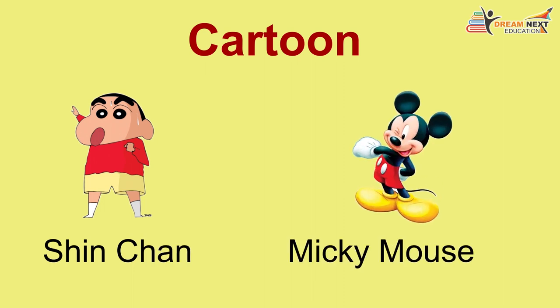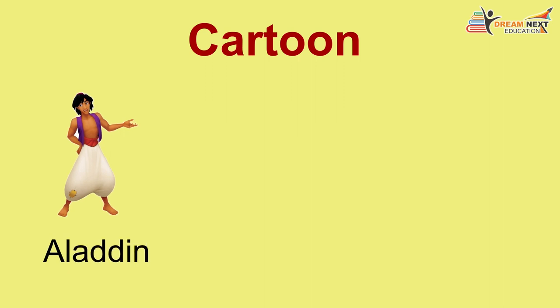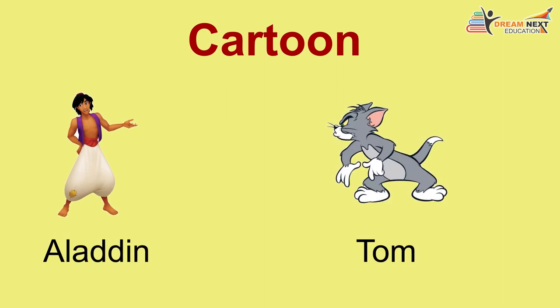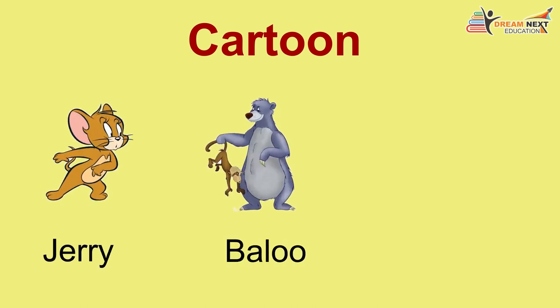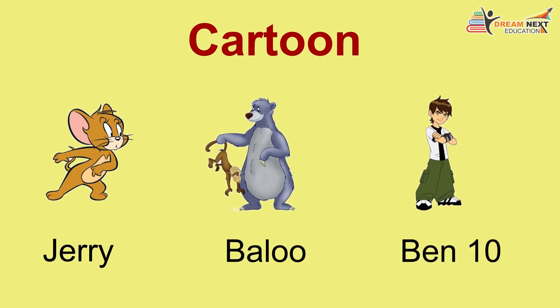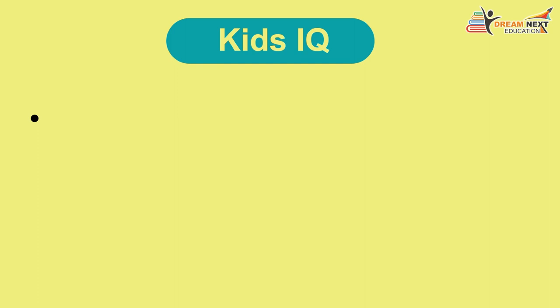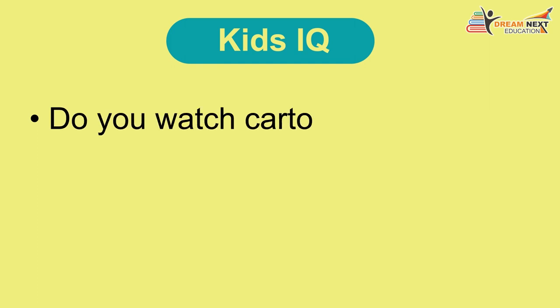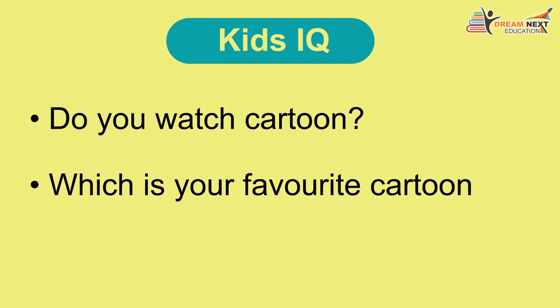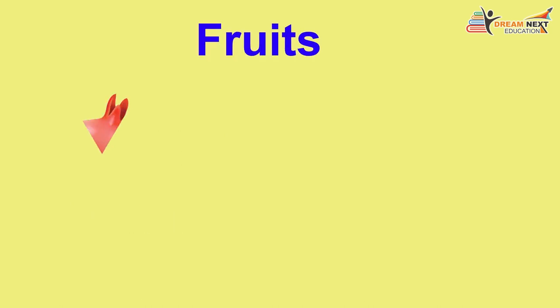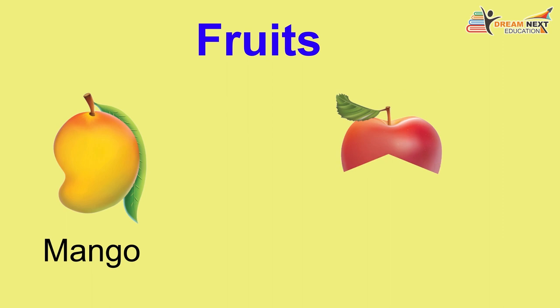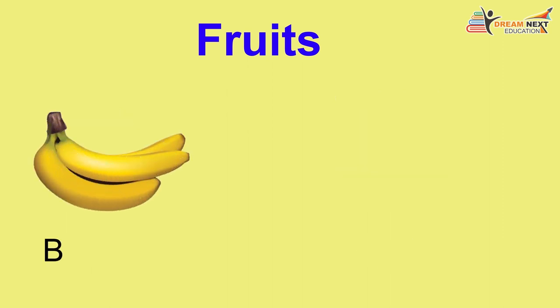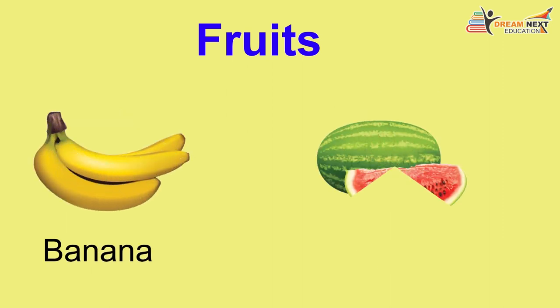Cartoons: 1. Doraemon, 2. Donald Duck, 3. Shin Chan, 4. Mickey Mouse, 5. Aladdin, 6. Tom, 7. Jerry, 8. Baloo, 9. Ben Ten. Kids IQ: Do you watch cartoons? Which is your favorite cartoon character? Fruits: 1. Pomegranate, 2. Pear, 3. Mango, 4. Apple, 5. Banana.